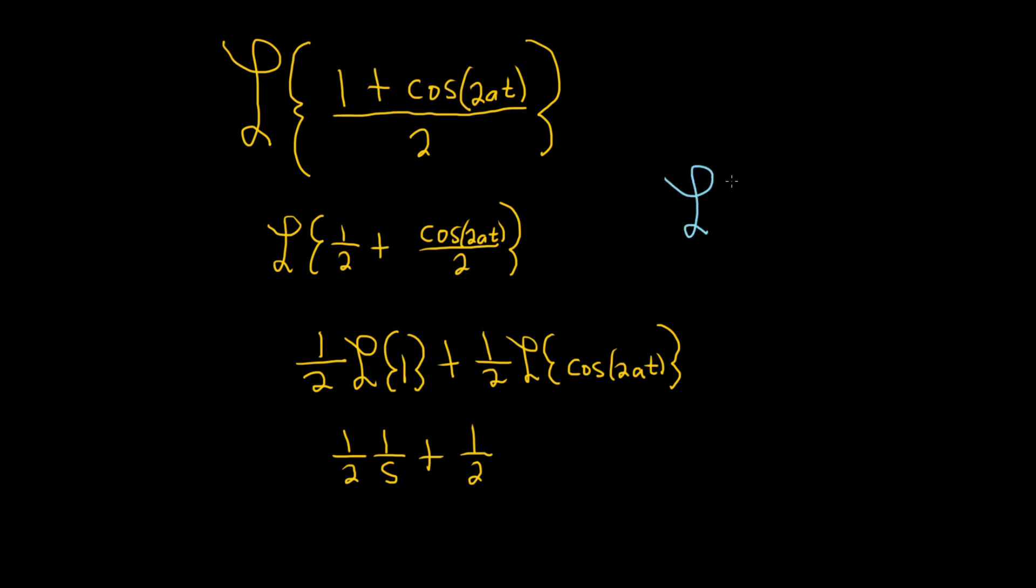If you have the Laplace transform of cosine of kt, just remember cosine has the s, so it's s over s squared plus k squared. Sine has the k, so if it was sine of kt, you'd have a k. Cosine has the s.